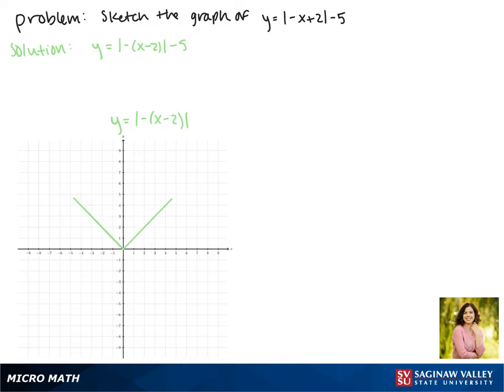Since we're subtracting 2 from x inside of our absolute value, this shifts our function 2 places to the right, so that now our vertex passes through 2, 0.